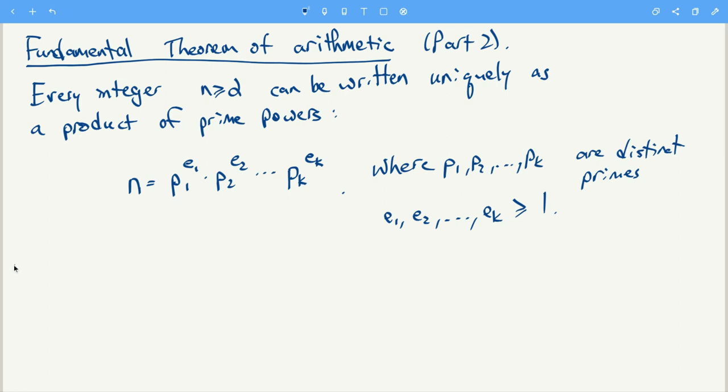Or even another further way is to write n as a product over p prime, p to the vp. You can actually write n as an infinite product if you want, where this vp is 0 for all the primes that don't occur in the factorization of n.